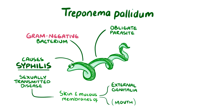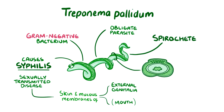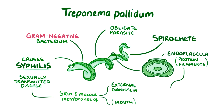They belong to a group of bacteria called spirochetes, which are long and thin and contain endoflagella, which are a band of protein filaments that coil within the spirochetes and give them a spiral shape — kind of like a curly fry, but a little less appetizing. The endoflagella also help the spirochetes to move around by spinning or twisting, a bit like a drill that's slowly boring into a piece of wood.